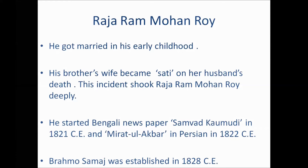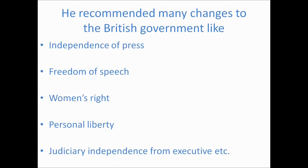He initiated many reforms and protested strongly against evil customs such as child marriage, casteism, and Dhudhpithi. He started the Bengali newspaper Samwat Kaumadhi in 1821 CE and also Mirat Ull Akbar in Persian in 1822 CE. Brahmo Samaj was established in 1828 CE. He also established the Hindu College in Kolkata. He recommended many changes to the British government including independence of the press, freedom of speech, women's rights, personal liberty, judicial independence from the executive, and more.